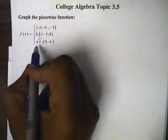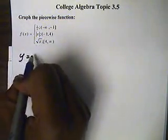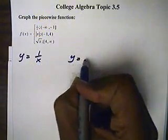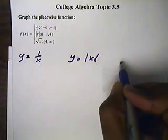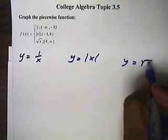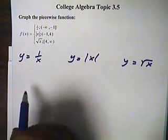Here we're going to separate these three equations into y equals 1 over x, y equals absolute value of x, and y equals square root of x, and we're going to graph each one of these.